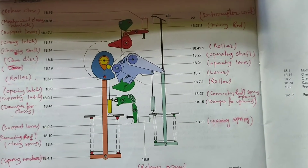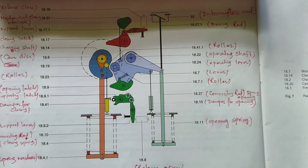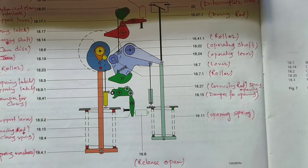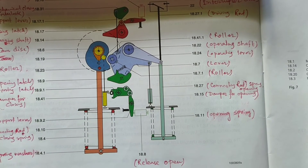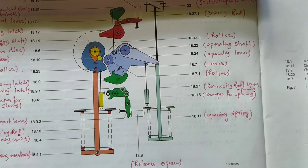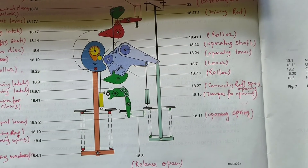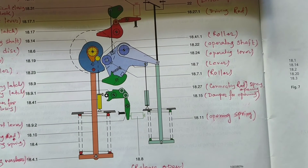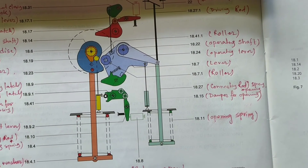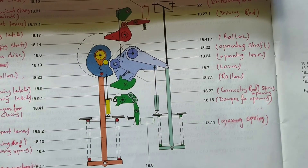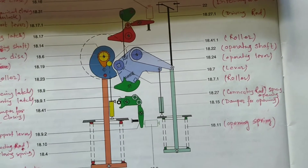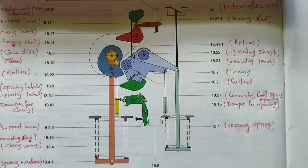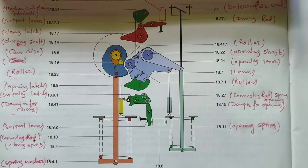Hi friend, how are you today? Our discussing topic is about the functional diagram of closing and opening latching — that means the breaker on and off, what is the function inside the breaker happening by help of the mechanical part. Today the discussion is about the mechanical parts and which types of mechanical parts are there for closing and opening latch.